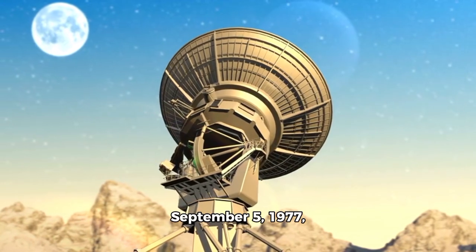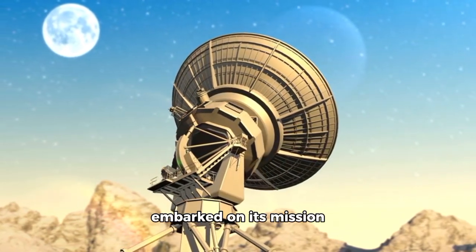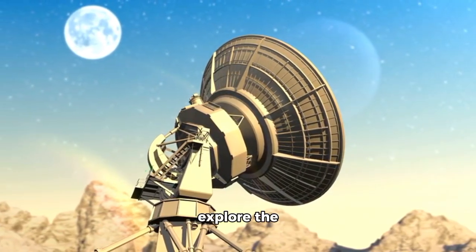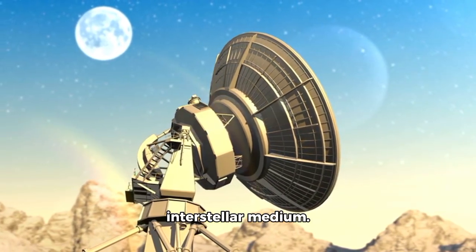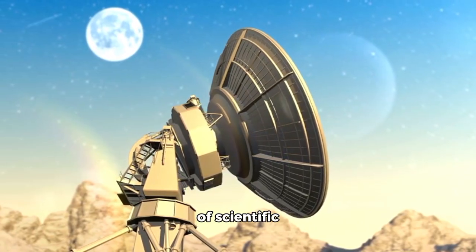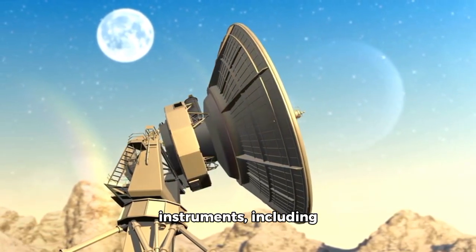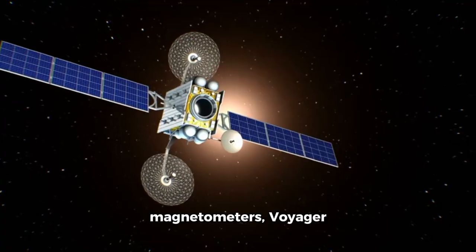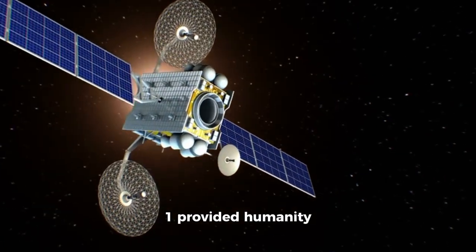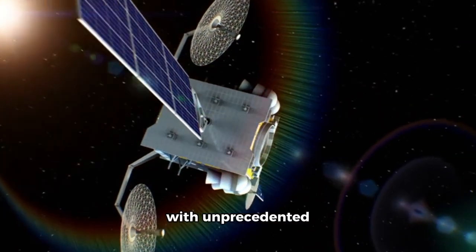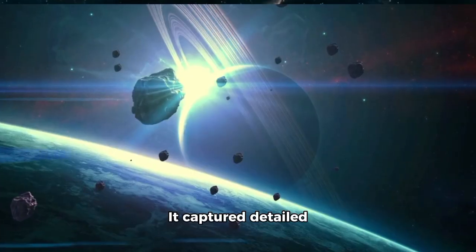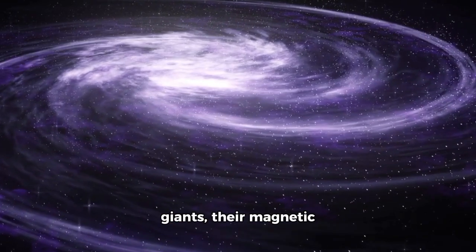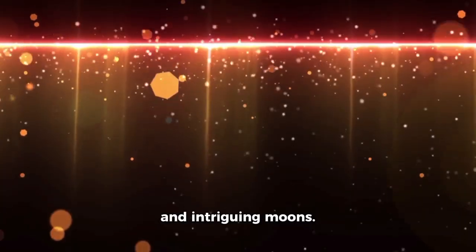Voyager 1, launched on September 5, 1977, embarked on its mission to study the outer planets and eventually explore the interstellar medium. Equipped with a suite of scientific instruments, including imaging systems, spectrometers, and magnetometers, Voyager 1 provided humanity with unprecedented views of Jupiter and Saturn. It captured detailed images of these gas giants, their magnetic fields, weather patterns, and intriguing moons.